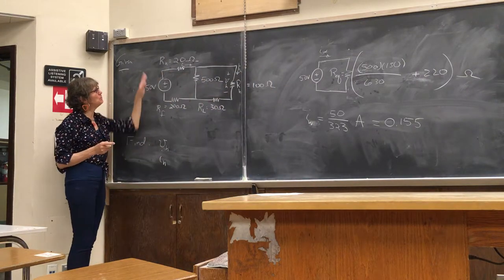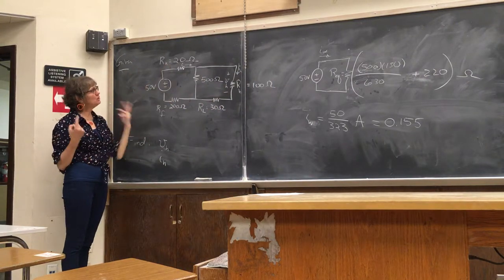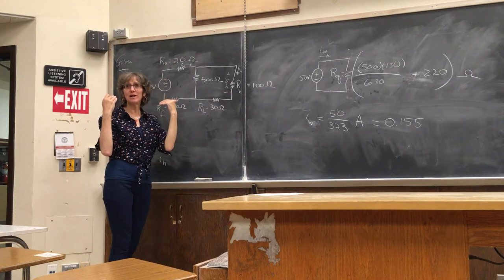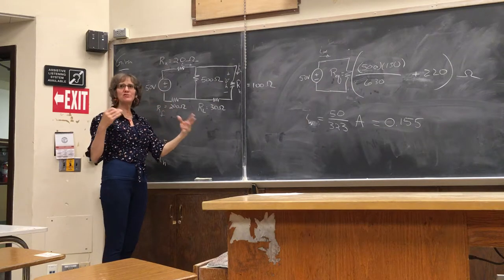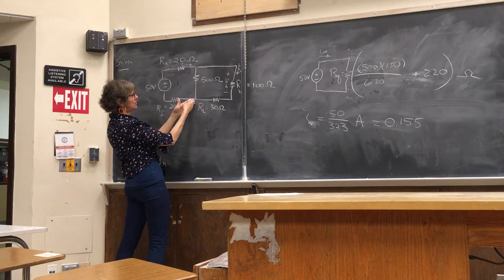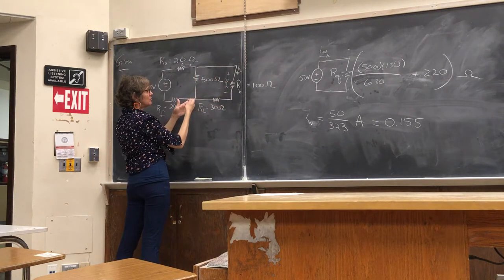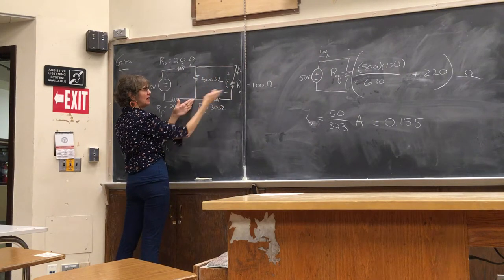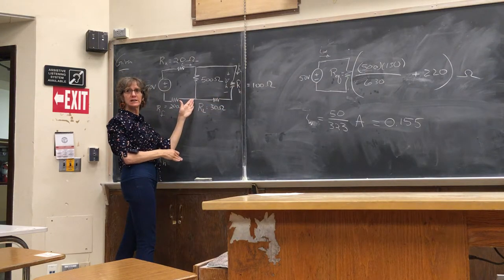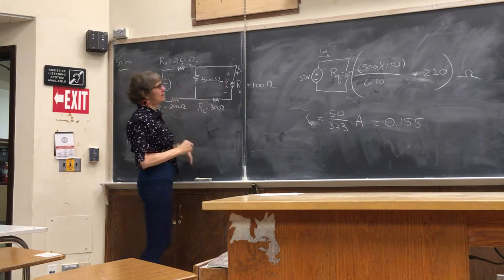Okay, so now we know IW. Now we can go back here and use current division. And again, it's not exactly the pretty picture that we have in our mind for current division, but it's close enough. We've got to be able to be flexible and interpret this. So we do have a resistor with another resistor in parallel, but the other resistor is 130, not 100. Everybody see that?